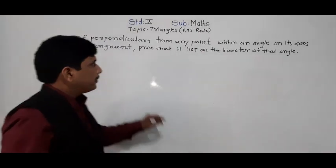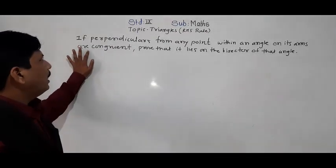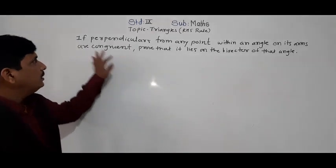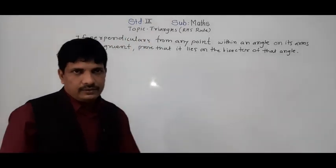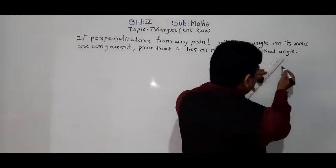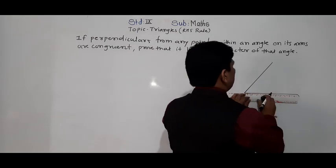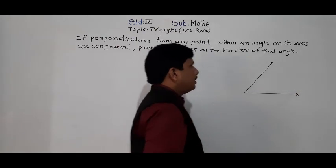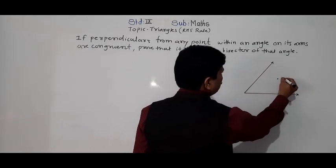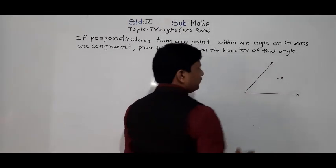The next problem is: if perpendiculars from any point within an angle on its arms are congruent, prove that it lies on the bisector of the angle. Suppose we take one angle — a point P is within angle ABC. Perpendiculars are drawn from P on the arms AB and BC of angle ABC.